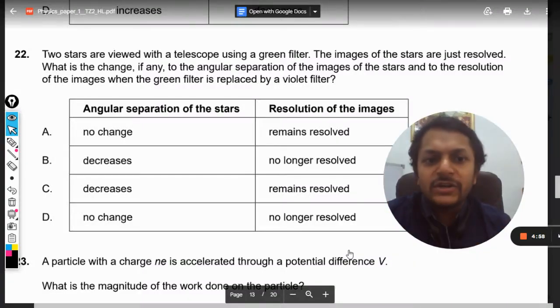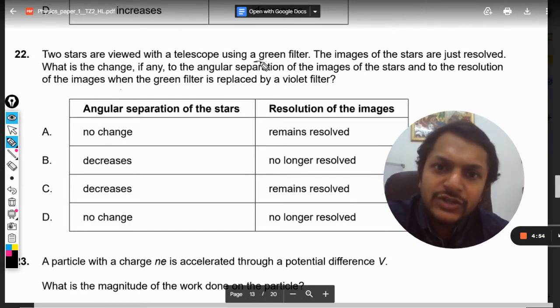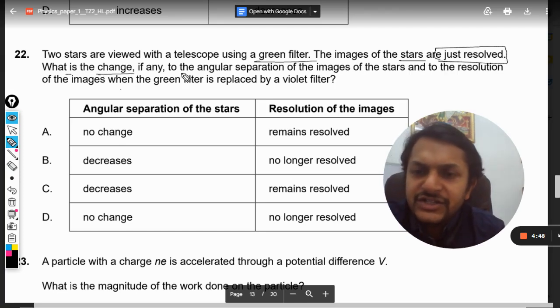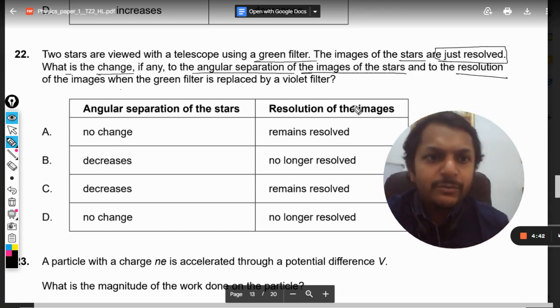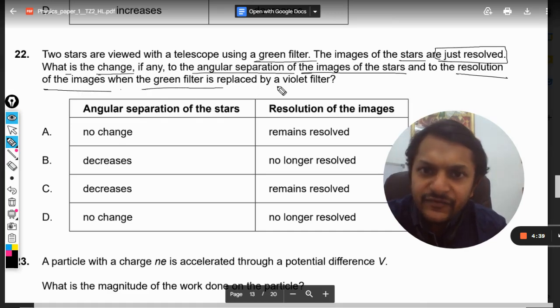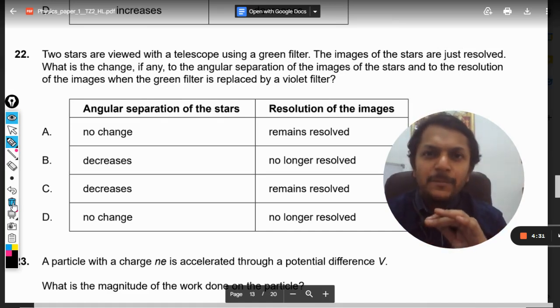Okay dear students, let us see what is there in this question. Two stars are viewed with a telescope using a green filter. The images of the stars are just resolved. What is the change, if any, to the angular separation of the images of the stars and to the resolving power or the resolution of the images when the green filter is replaced with the violet filter? Now first of all, to understand this topic we must learn a little bit of theory behind it.